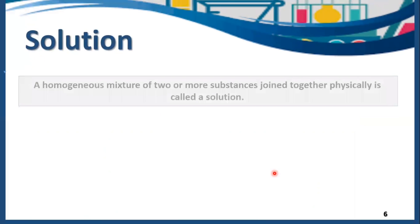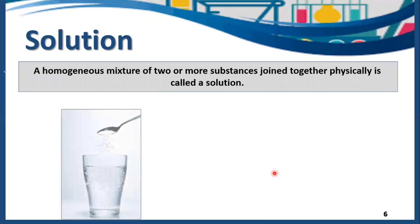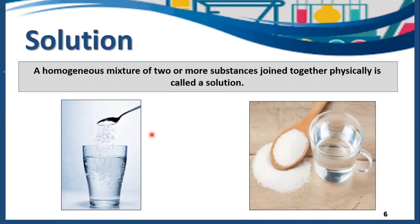Now what is a solution? A homogeneous mixture of two or more substances joined together physically is called a solution. A solution is formed when solute and solvent are mixed together, but remember that after mixing, the solution should be homogeneous. Homogeneous means a uniform solution in which the particles of solute are indivisible.